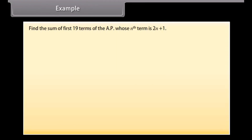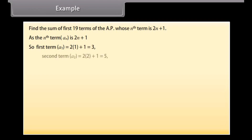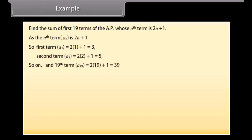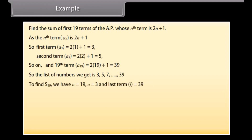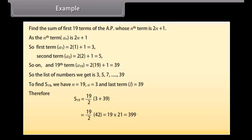Find the sum of the first 19 terms of the AP whose Nth term is 2N plus 1. Since AN equals 2N plus 1, the first term A1 equals 3, the second term A2 equals 5, and the 19th term equals 39. So the list of numbers is 3, 5, 7, and so on up to 39. To find S19, we have N equals 19, A equals 3, and L equals 39. Therefore S19 equals 19 upon 2 into (3 plus 39), equals 19 upon 2 into 42, equals 19 into 21, which equals 399. Hence the sum of the first 19 terms is 399.